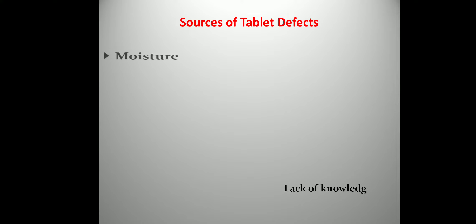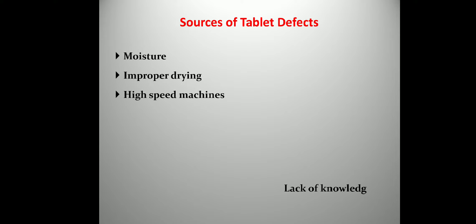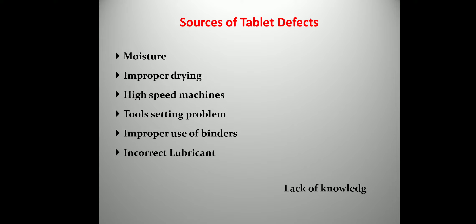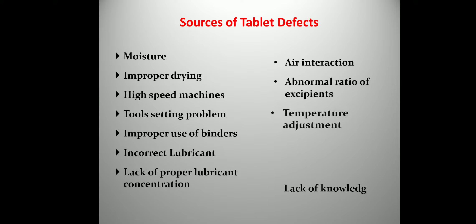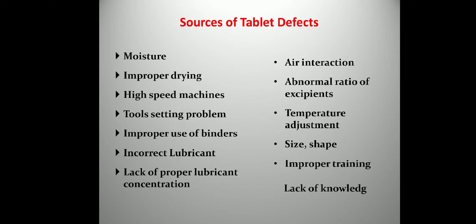Sources of tablet defects include: moisture — either low or high moisture can cause a defect; improper drying — both high and low drying can cause defects; high machine speed; tool setting problems; improper use of binders; incorrect or lack of proper lubrication; air entrapment; abnormal ratio of excipients; temperature; size and shape issues; and improper training and lack of knowledge. All these are key players in causing tablet defects.